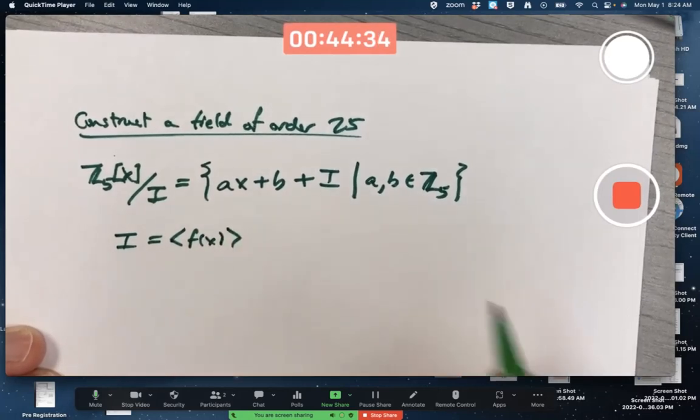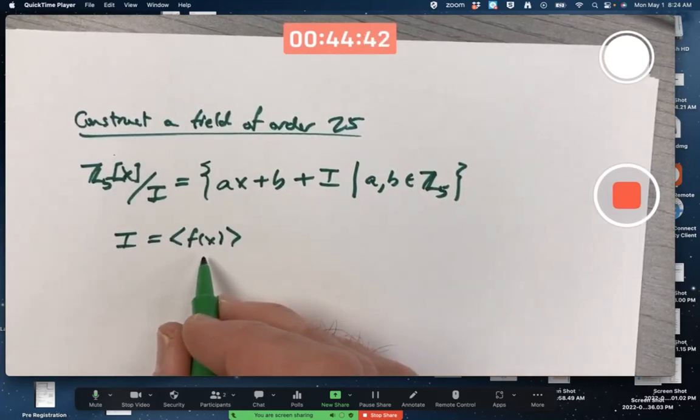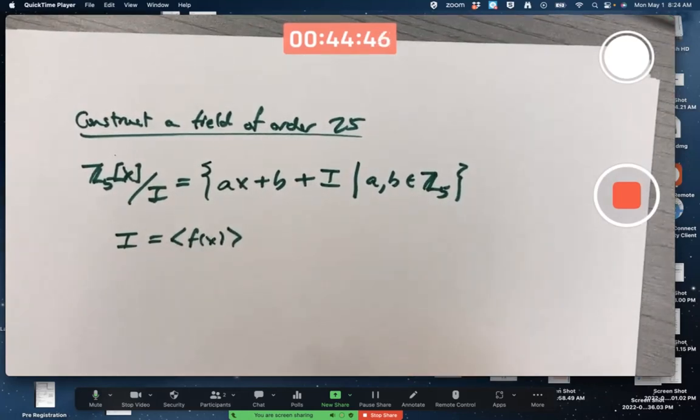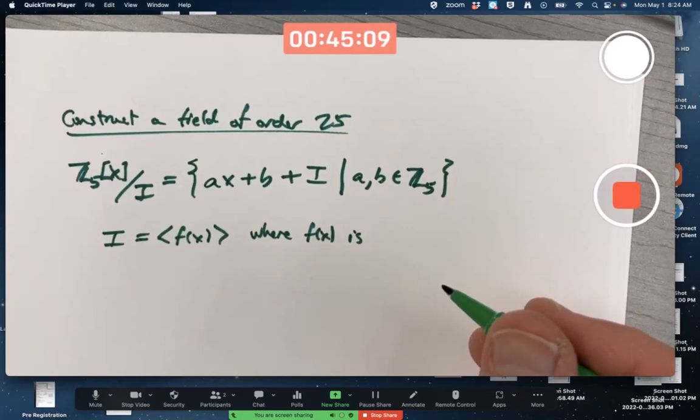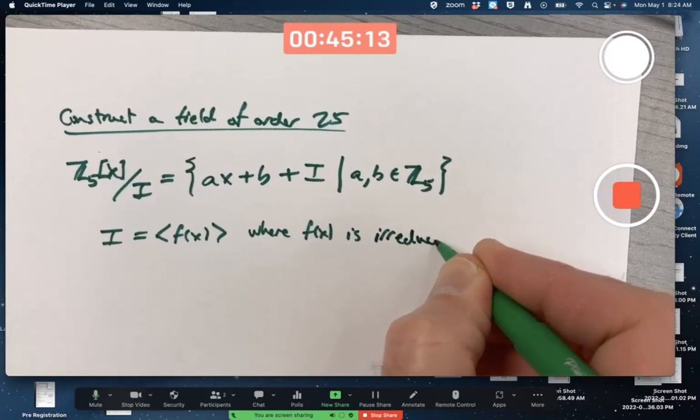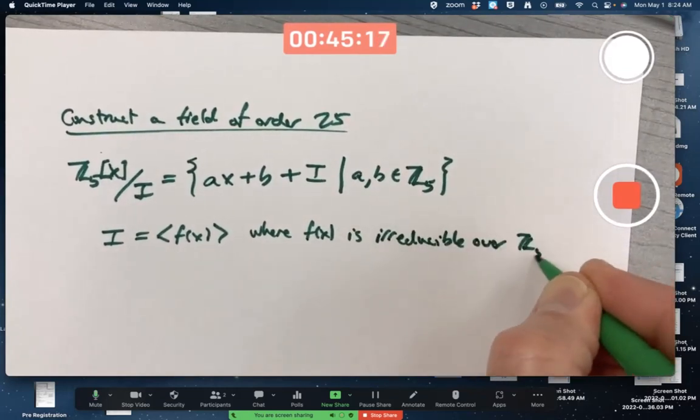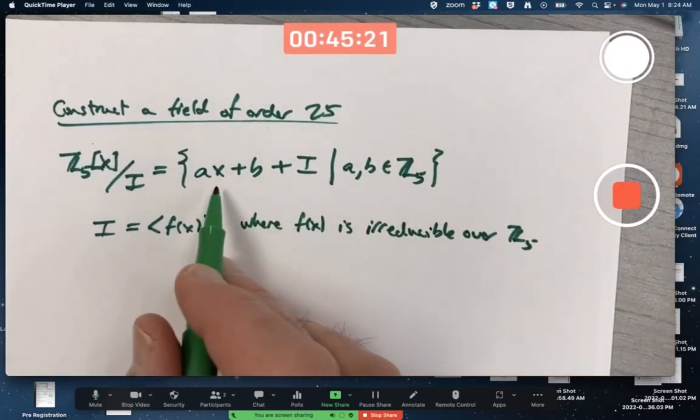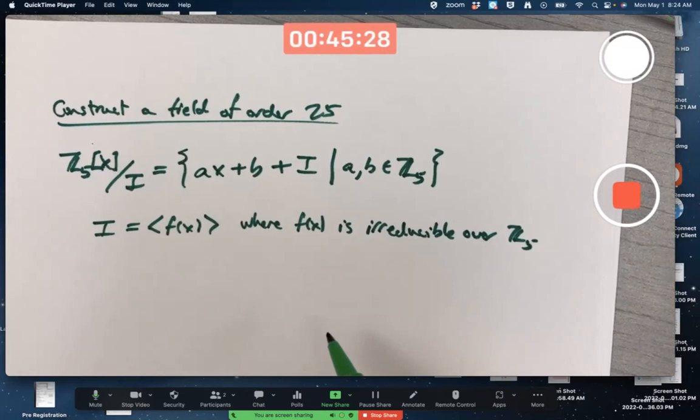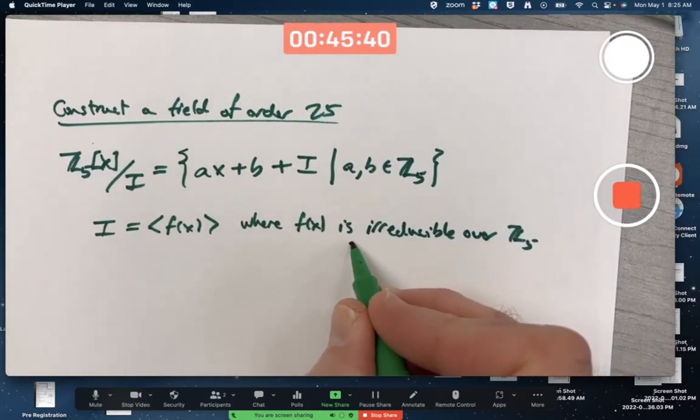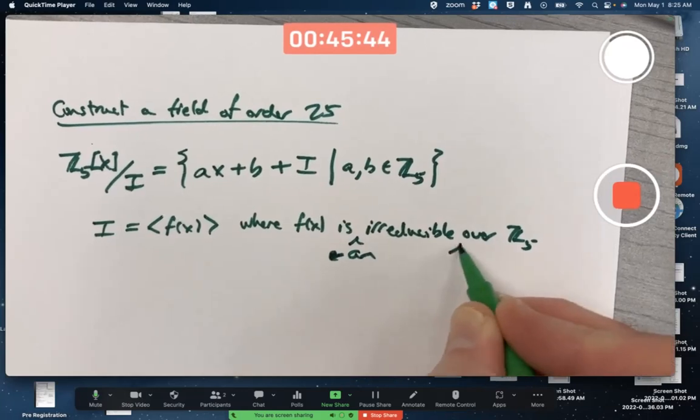There's something special that's got to happen with I. I is going to be generated by some polynomial, the principal ideal generated by some polynomial, and based on a theorem, what's the condition that you need to be true about the polynomial for this to work? Either starts with an I or an R, and it's got reducible in it. Irreducible. Irreducible over Z5, that's not quite good enough yet. If the representatives are going to be linear, it better be, F of X better be quadratic.